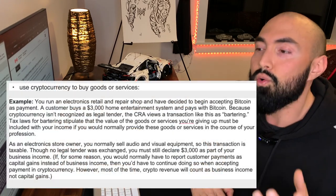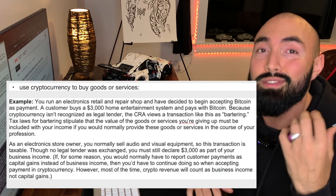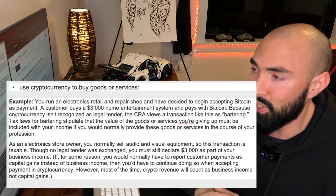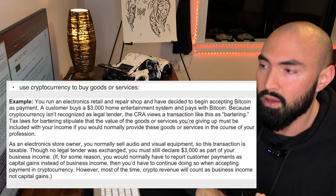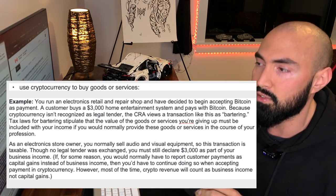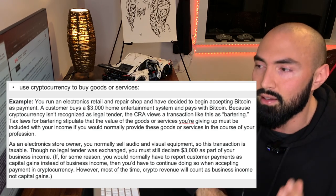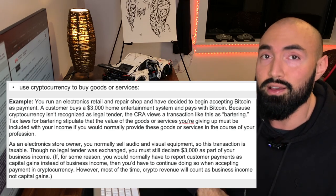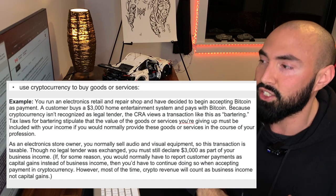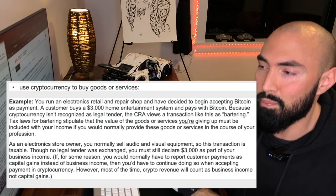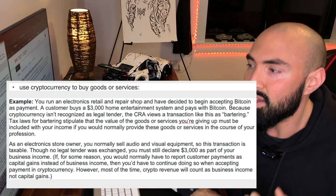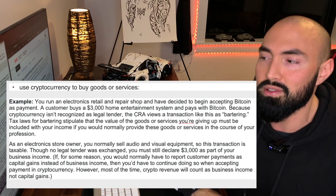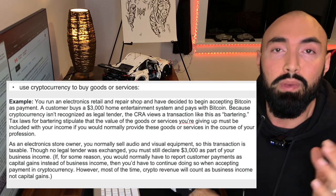The fourth way a taxable event can be triggered is using cryptocurrencies to buy goods or services. The CRA provides a great example: you run a retail and repair shop and begin accepting Bitcoin as payment. A customer buys a $3,000 home entertainment system and pays with Bitcoin. Because cryptocurrency isn't recognized as legal tender — it's recognized as a commodity — the CRA views this as bartering. As the owner, because no legal tender was exchanged, you must declare the $3,000 as business income, which is completely taxable.